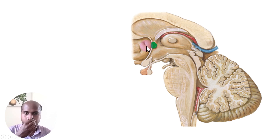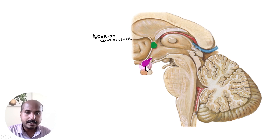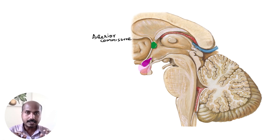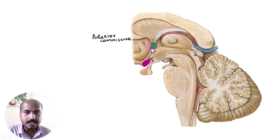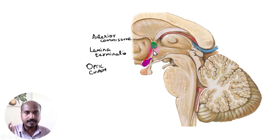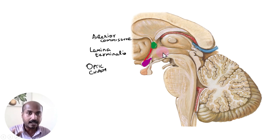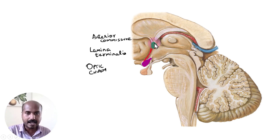This structure is the optic chiasma, where half of the neurons of each optic nerve decussate — we call this hemi-decussation — and that occurs in the midline. Stretched between the anterior commissure above and the optic chiasma below is the lamina terminalis. The lamina terminalis is found in front of the third ventricle. This cavity is the third ventricle, this is the aqueduct of Sylvius, and this is the hypothalamic sulcus — so this region is the hypothalamus.